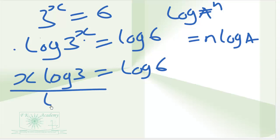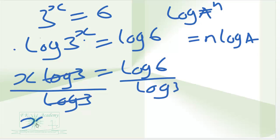We can divide through by log 3. So log 3 will cancel log 3. We are left with x is equal to log 6 divided by log 3.